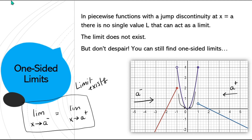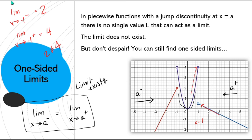Looking at the red line: the limit as x approaches −1 from the left side appears to be 2. And the limit as x approaches −1 from the positive side — now we're on the parabola — as we approach −1 from the positive side, we're approaching 4. So this limit does not exist because 2 is not equal to 4. Another place on this graph where the limit does not exist is at x = 1: from the right we are approaching f(x) = 0.5, and from the left we are approaching f(x) = 4.